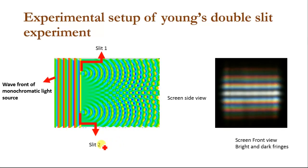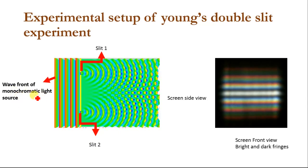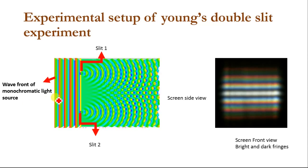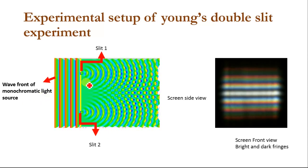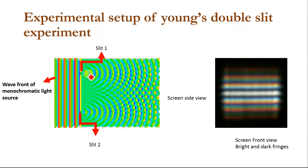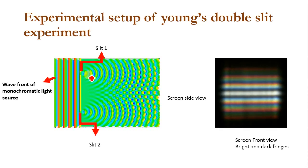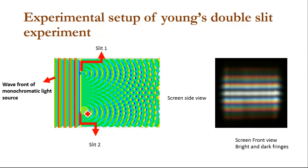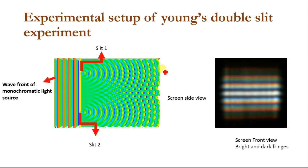This is the experimental setup of Young's double slit experiment. We use a monochromatic light source and split this monochromatic light into new wavelets. When they pass through slit 1 and slit 2, new wavelets are generated through these slits. The interference of light in Young's double slit experiment can be explained using Huygens' principle. According to Huygens' principle, the wavefront of a monochromatic light source acts as a source and generates secondary waves or secondary wavefronts. These two waves then interfere with each other and create bright and dark fringes on the screen.